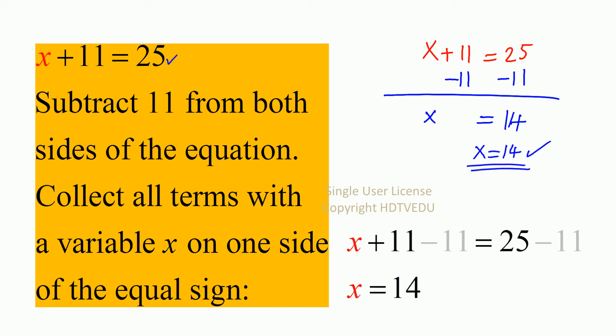So x plus 11 is equal to 25. Subtract 11 from both sides of the equation. Collect all terms with the variable x on one side of the equal sign. And what do we get? x plus 11 minus 11 equals 25 minus 11.